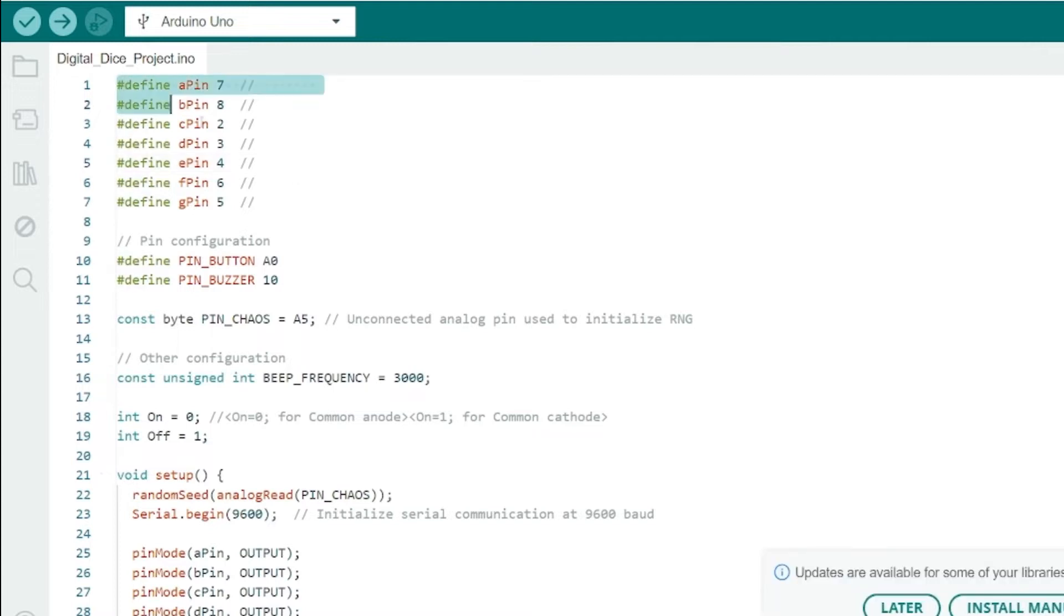Here you can see we have defined the pins for each segment of the seven segment display. These pins will control which segments light up to form the numbers. Next we have defined the pins for the push button and buzzer.